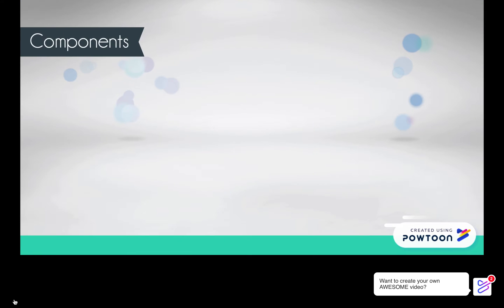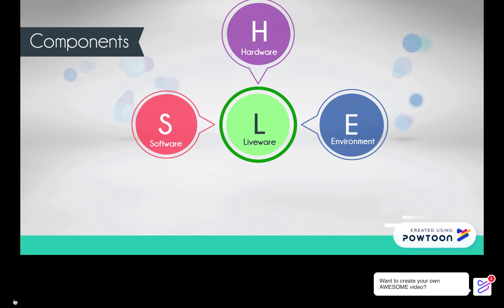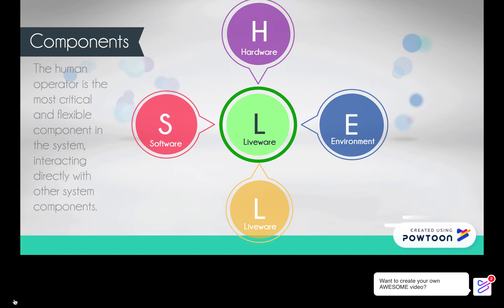The components of the Shell Model include primary liveware, software, hardware, environment, and secondary liveware. The human operator is the most critical and flexible component in the system, interacting directly with the others.